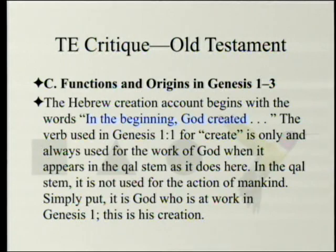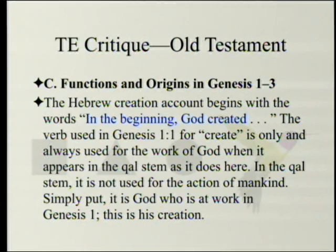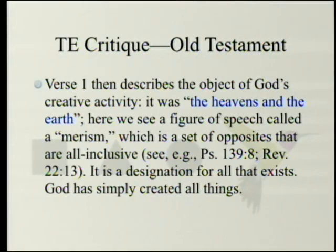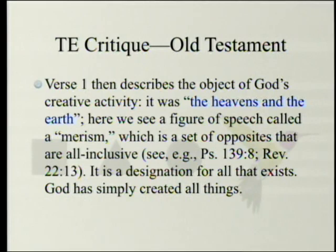Functions and origins in Genesis 1-3. The Hebrew creation account begins with the words 'In the beginning God created.' The verb used in Genesis 1 for 'create' is only and always used for the work of God when it appears in the qal stem as it does here; in the qal stem it is not used for the action of mankind. Simply put, it is God who is at work in Genesis 1. This is his creation. Verse 1 then describes the object of God's creative activity: the heavens and the earth — a figure of speech called a merism, which is a set of opposites that are all-inclusive. It is a designation for all that exists. God has simply created all things.